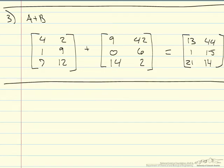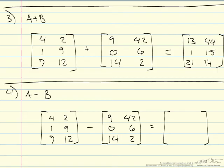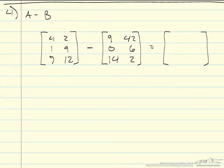The second problem is similar to the second problem of scalar subtraction. In this situation, what you would do is you subtract each element from its corresponding element in the other matrix. So, what you end up with is negative 5, negative 4, 1, 3, negative 7, and 10.